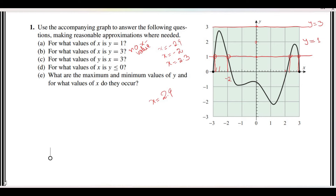Then: for what values of y is x = 3? Now x = 3 means x = 0, x = 1, x = 2, and x = 3. If you draw this straight vertical line x = 3, we have to see wherever it touches the graph and find that value on the y-axis. It touches the graph only at one point, and there the y value is y = 0.